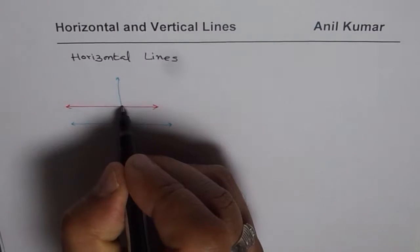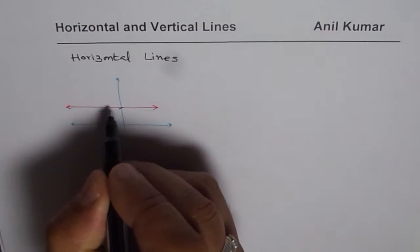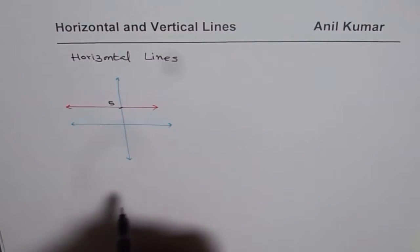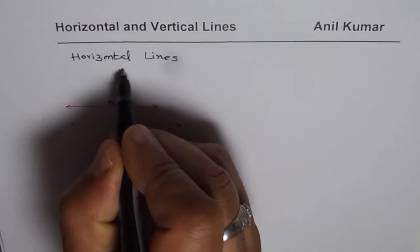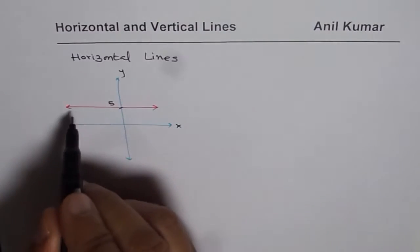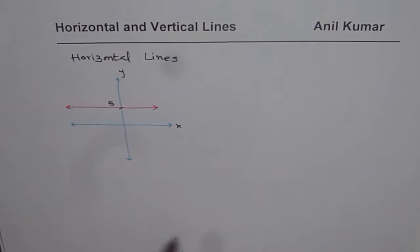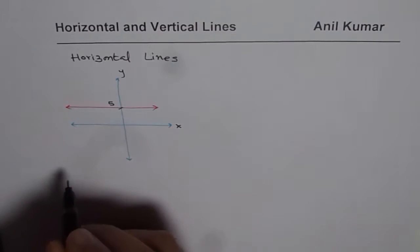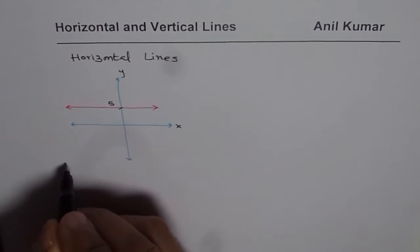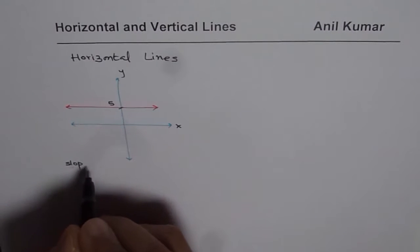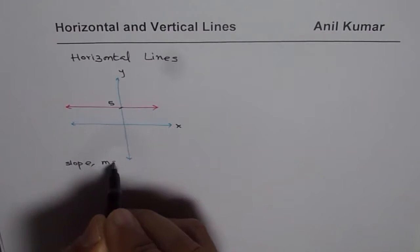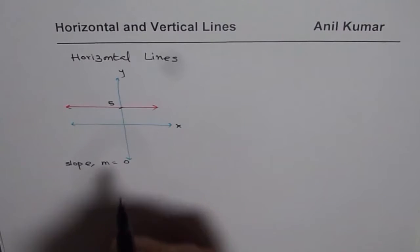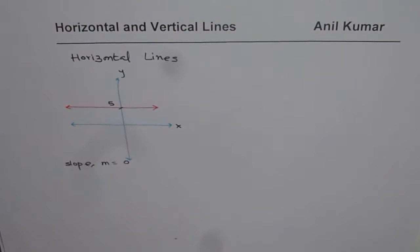Let us say this y-intercept is 5. Can you tell me the equation of this line? What is the equation of a horizontal line? As far as the horizontal line is concerned, we know what the slope is. Slope m for any horizontal line is going to be 0.